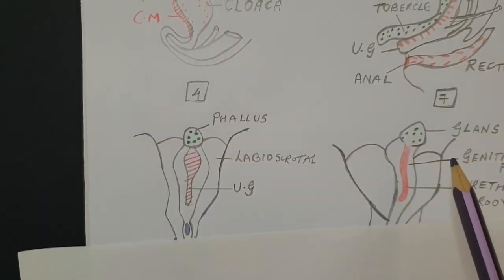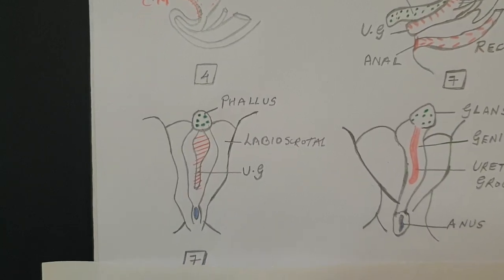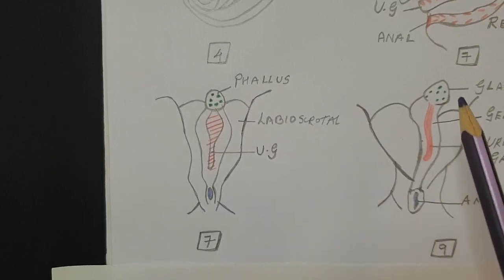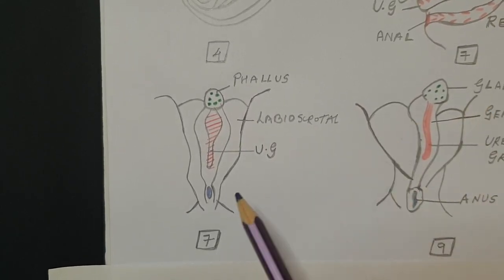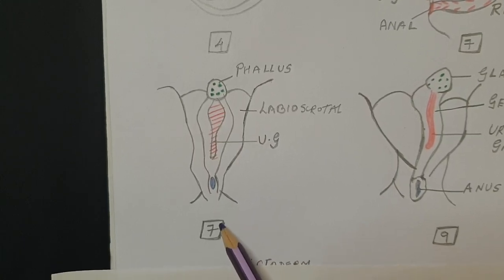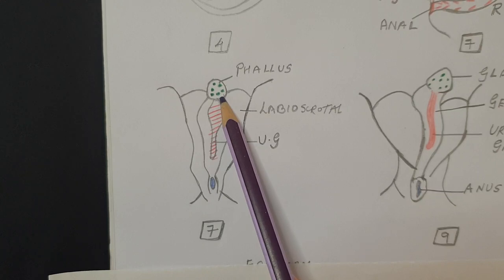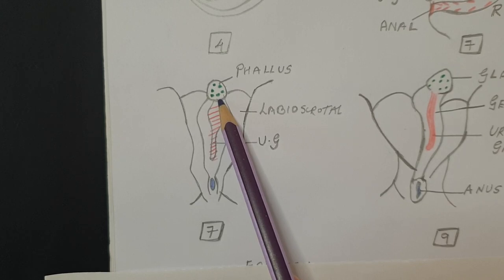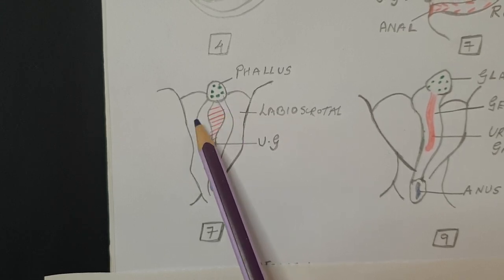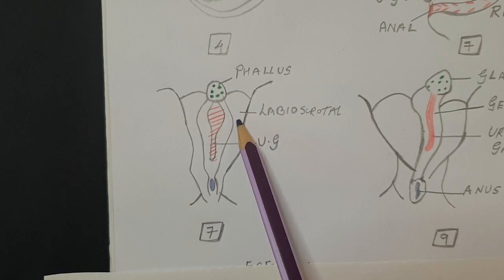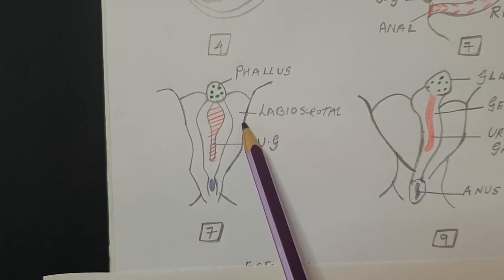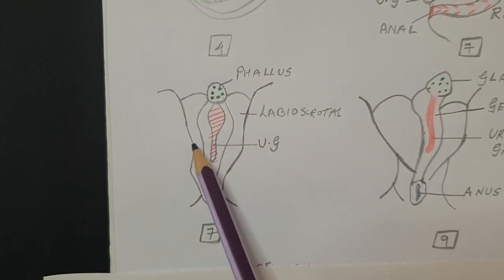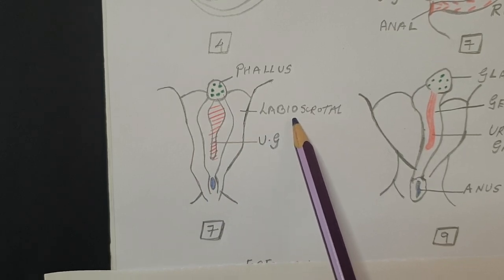As the hormonal influence occurs by the seventh week, we can now see the view of the external genitals. The genital tubercle which began to develop is going to help form the phallus, and on either side there is development of the labioscrotal or genital swellings, which are a pair of elevations. In males these will form the scrotum, or the labia majora in the case of females.